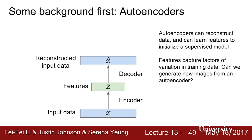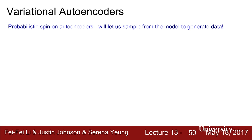Autoencoders can reconstruct data and learn features to initialize supervised models. Features Z capture factors of variation in the training data. Based on this intuition, a natural question arises: can we use a similar setup to generate new images? Variational autoencoders are a probabilistic spin on autoencoders that will let us sample from the model in order to generate new data.